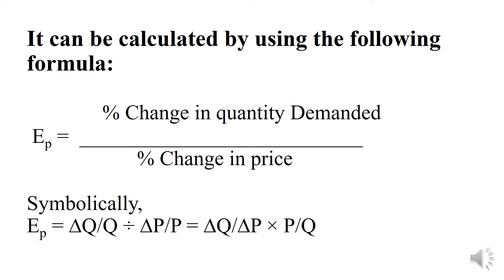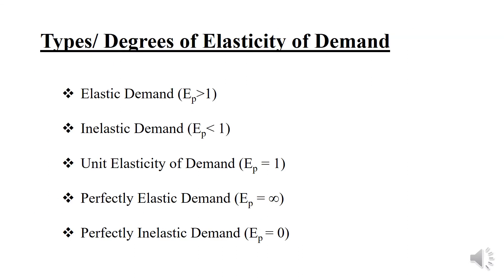Elasticity of demand is equal to percentage change in quantity demanded divided by the percentage change in price. The types or degrees of elasticity of demand are: elastic demand, inelastic demand, unit elasticity of demand, perfectly elastic demand, and perfectly inelastic demand.